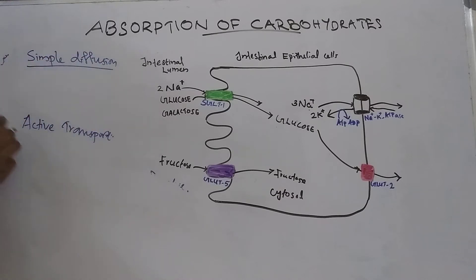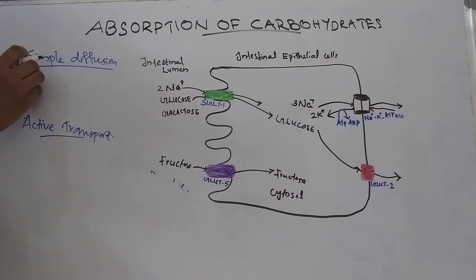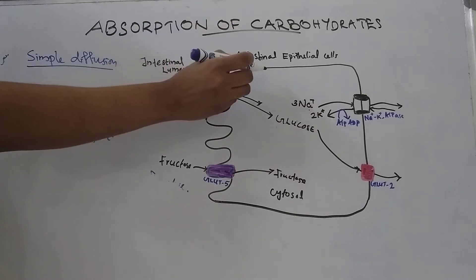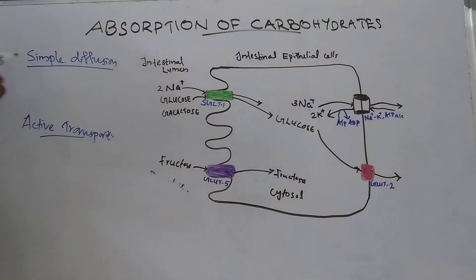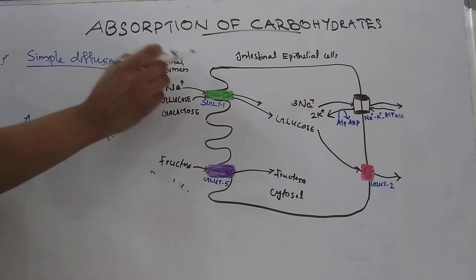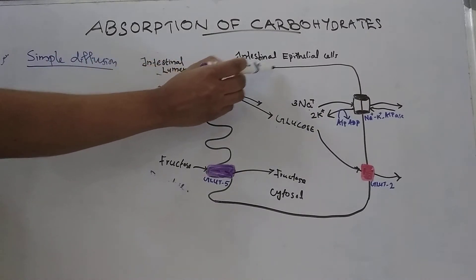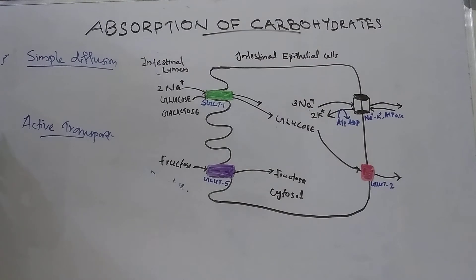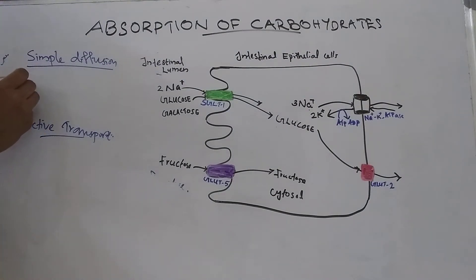The first mechanism is simple diffusion. Simple diffusion is dependent on the sugar concentration gradient between the intestinal lumen, mucosal cells, and blood plasma. All monosaccharides are absorbed to some extent by simple passive diffusion.